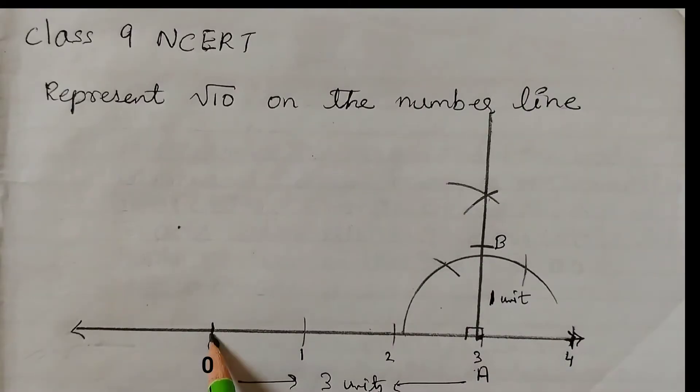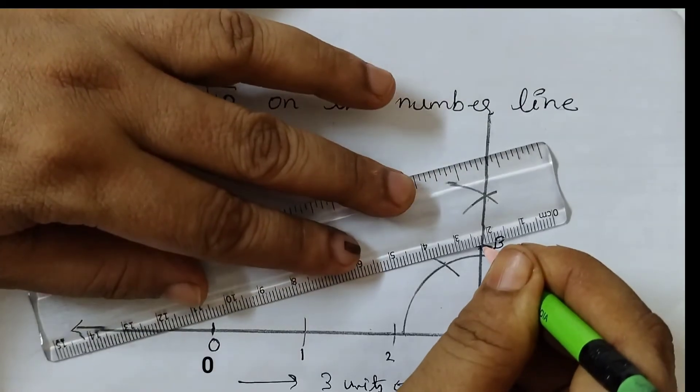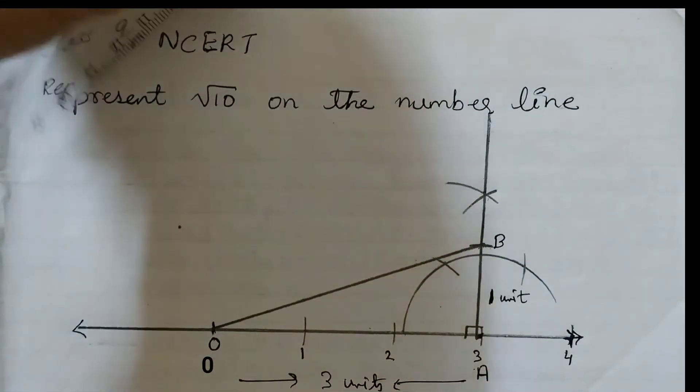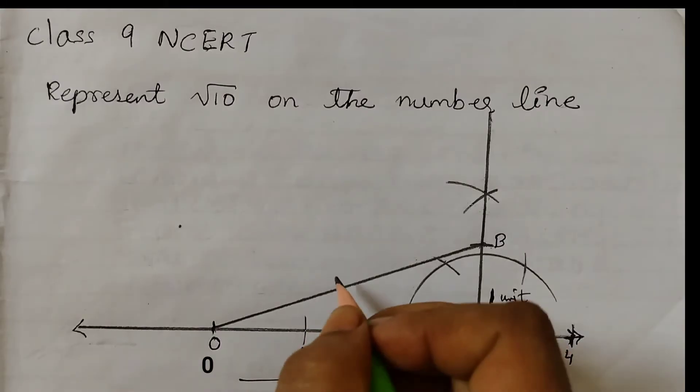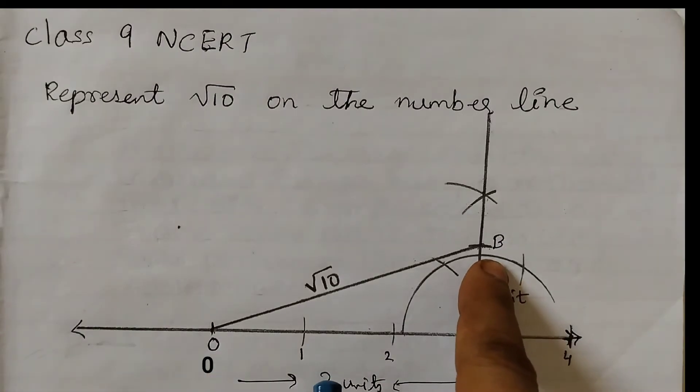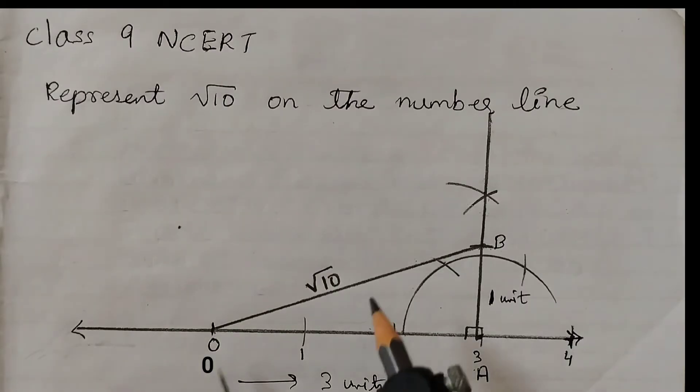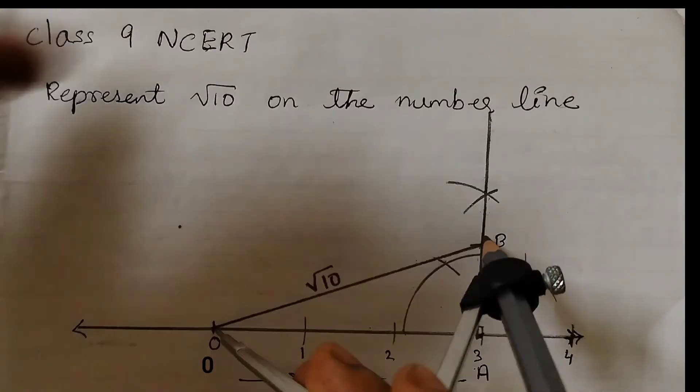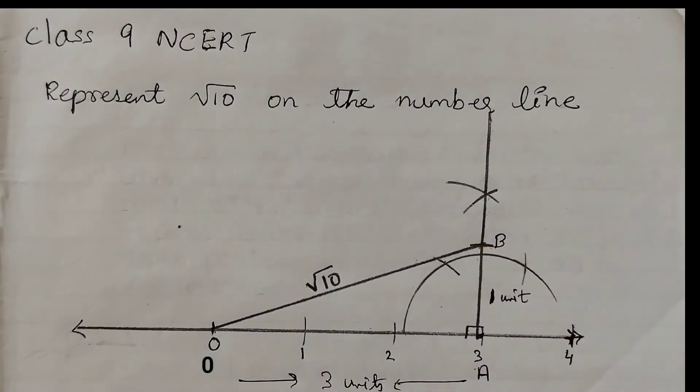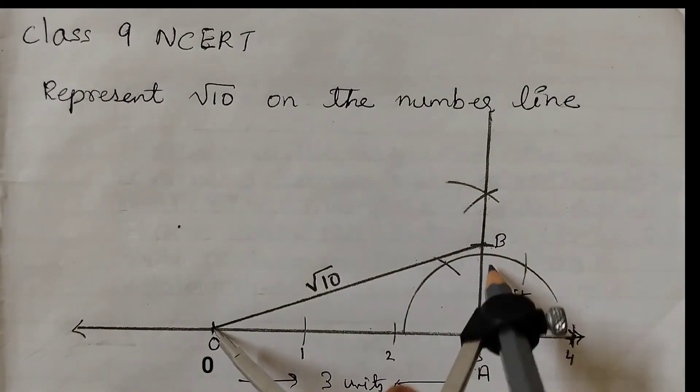Measure OB using compass and draw an arc on the number line at point C, and that will be your square root of 10. Take this OB measurement, so this is the measurement, and we will draw an arc cutting at the number line.